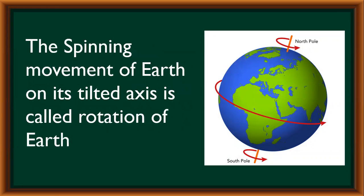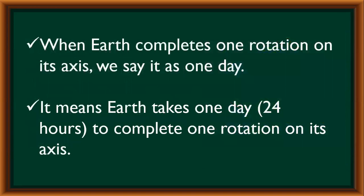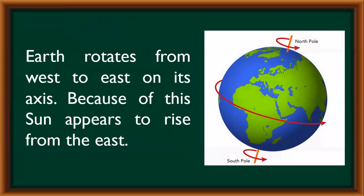The movement of earth on its tilted axis is called rotation of earth. When earth completes one rotation on its axis, we say it as one day. It means earth takes one day, that is 24 hours, to complete one rotation on its axis. Earth rotates from west to east on its axis. Because of this, the sun appears to rise from the east.